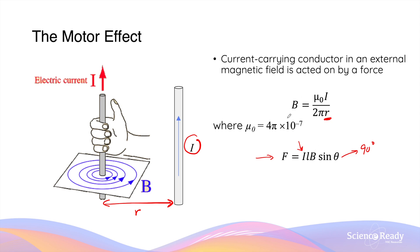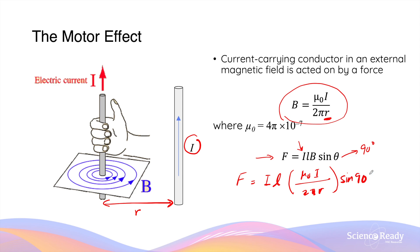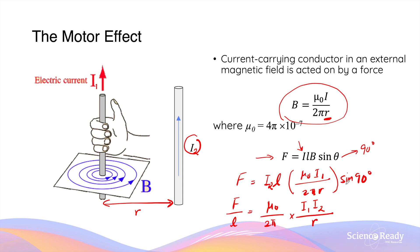We can substitute B with the previous expression. So force equals I·l·B, where B is μ₀I / 2πr, multiplied by sin 90°. Notice there are two variables for current in the same equation, referring to two different conductors. The first I refers to the second conductor, called I₂, and the second I, from the magnetic field strength equation, refers to the current in the first conductor, I₁. Simplifying: F/L = (μ₀ / 2π) × (I₁·I₂ / r), and sin 90° disappears because it equals 1.